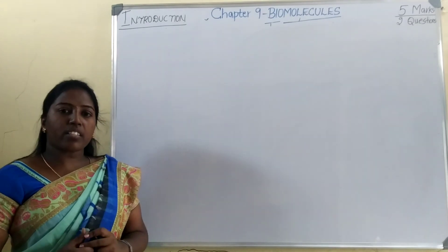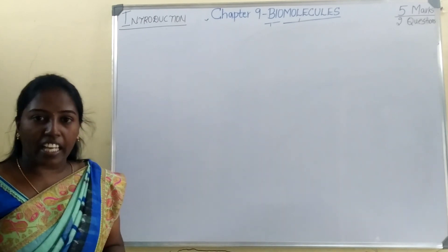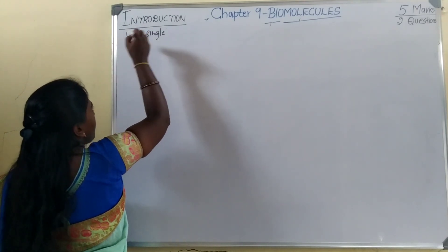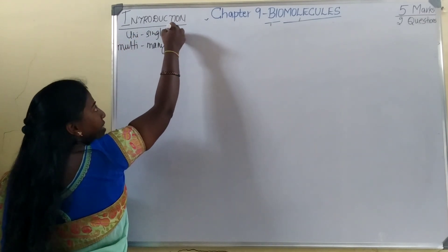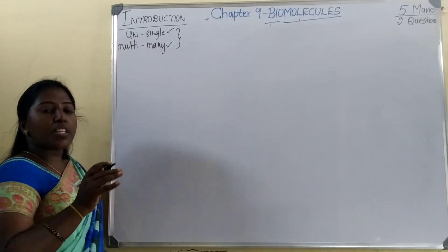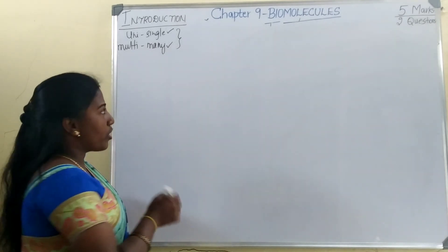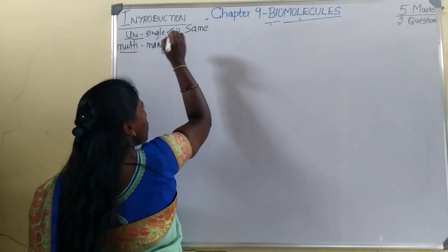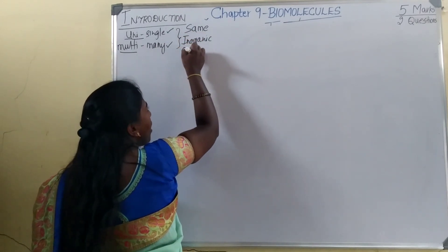Earth consists of various types of living organisms, which includes unicellular as well as multicellular organisms. 'Uni' means single cell, and 'multi' means it is made up of many cells. Either unicellular or multicellular, all are made up of similar types of inorganic elements and organic compounds.